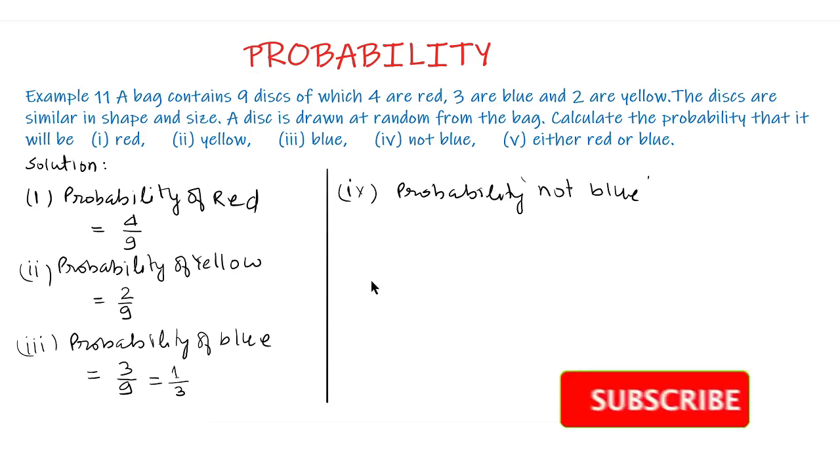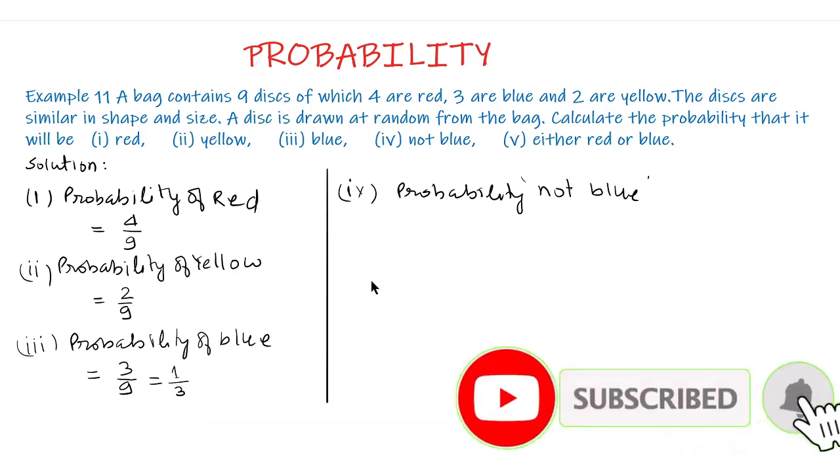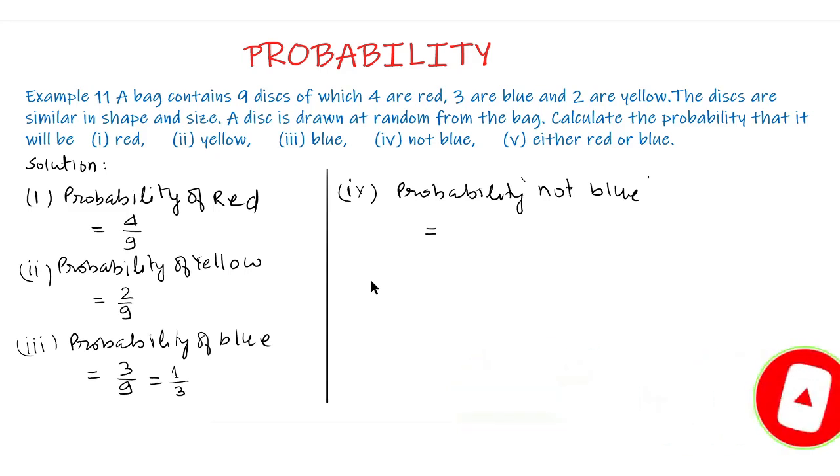Part 4, probability not blue. The probability of blue is 1 upon 3. Therefore probability of not blue is 1 minus 1 upon 3 which is equal to 2 upon 3.